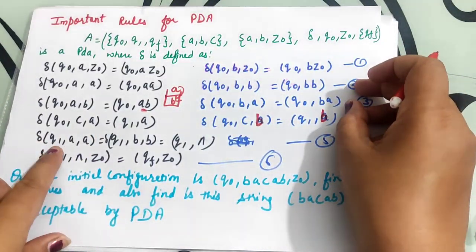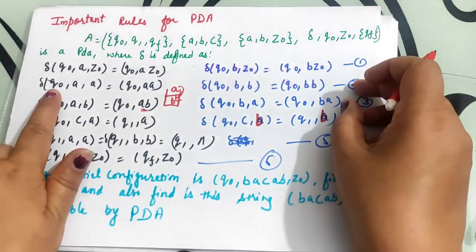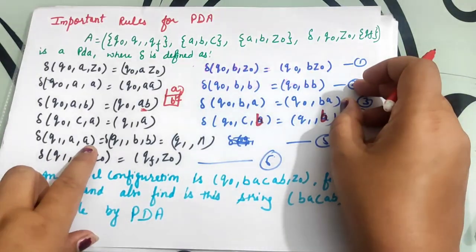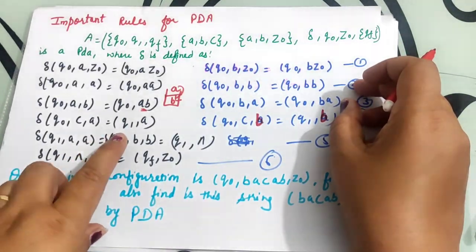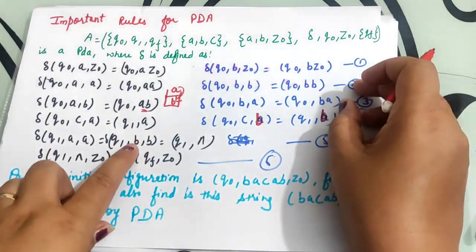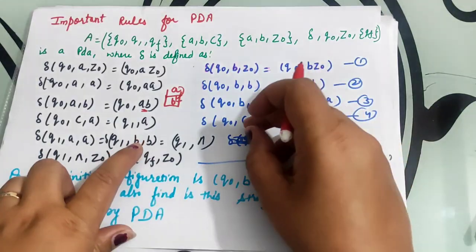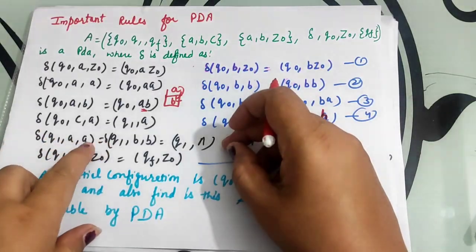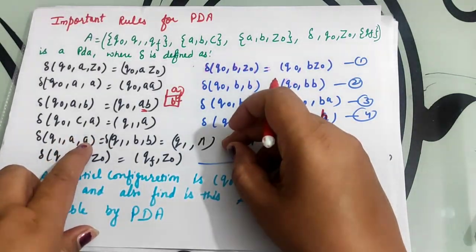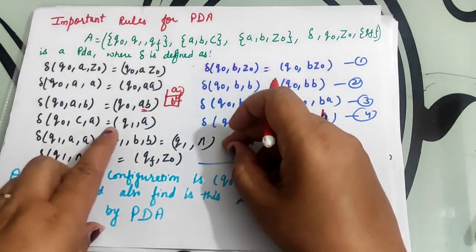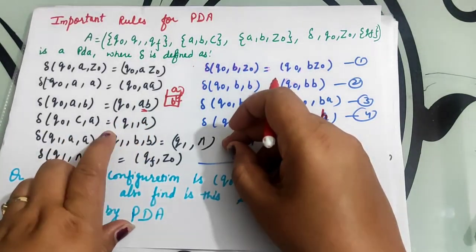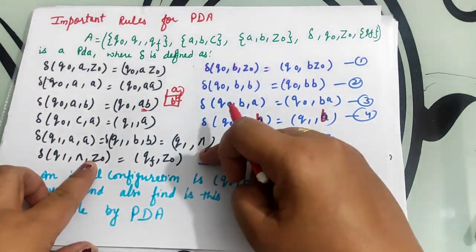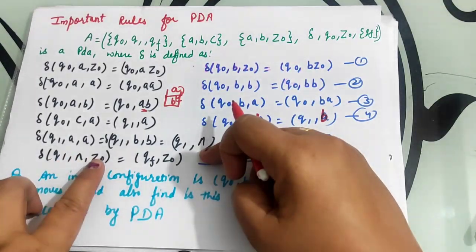Next rule: if q1 is the state — similar to q0 state rules — now at q1 state, if you want to insert 'a' and 'a' is already in the stack, same applicable for 'b': if you want to insert 'b' and 'b' is already in the stack, then rather than push, we use pop operation. This means if 'a' is already in the stack and you want to insert 'a' at q1 state, or 'b' is already there and you want to insert 'b' at q1 state, rather than push, pop both — the stack becomes null.